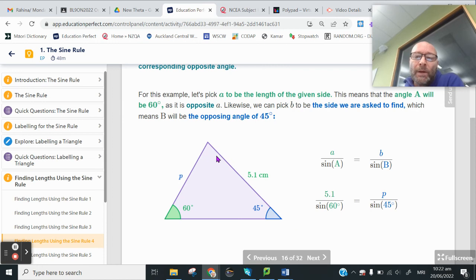So 5.1 over the sine of 60 is going to be equal to side P over the sine of 45.